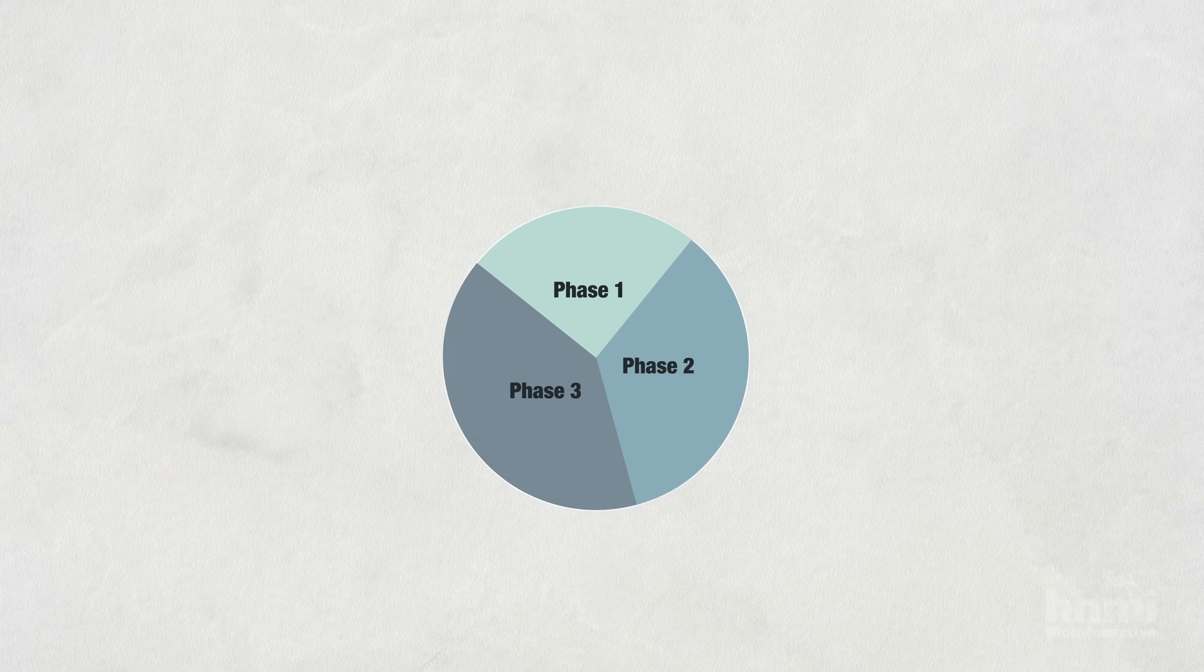It's helpful to think of the Calvin cycle in three phases: fixation, reduction, and regeneration.